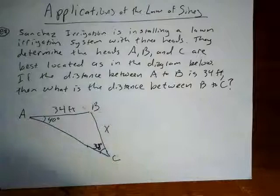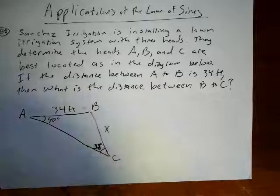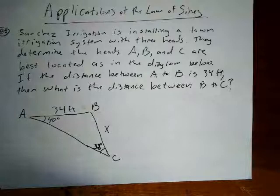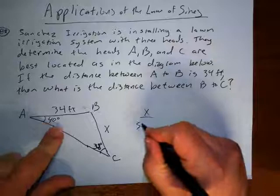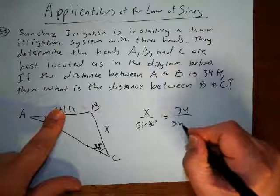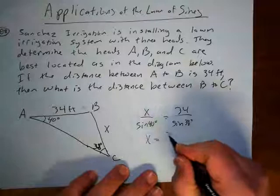There's angle, angle, side. You're finding this missing side over here. So we're going to use the law of sines then. So this side here is opposite the 40 degrees. So I could say X is to the sine of 40 degrees as the 34 is to the sine of 38 degrees. And then I can solve for X.